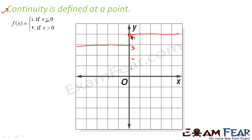A hollow hole means this point is not included. So at x = 0, y = 3, not 4. When it is hollow, you exclude that point; when it is solid, you include it. This is the graph for this function. Now we have to find whether it is continuous or not at x = 0, because just by looking at the graph we can tell it is a discontinuous function — to draw it, I had to lift my pen. But mathematically we can also prove it by finding the limit.